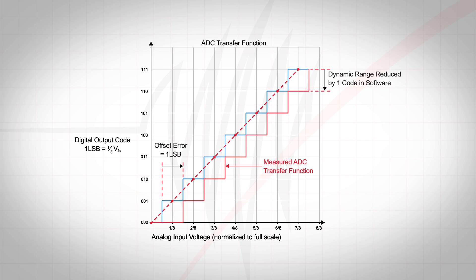To remove the offset error, one must subtract the offset error from each conversion in software. In this case, one LSB or a single digital code increment will need to be subtracted from each conversion. It should be noted that offset reduces the dynamic range of the ADC by its value.